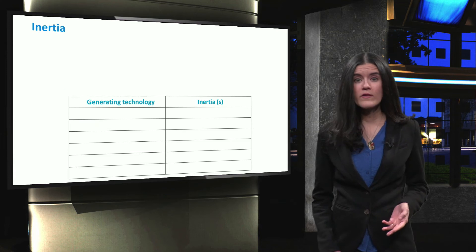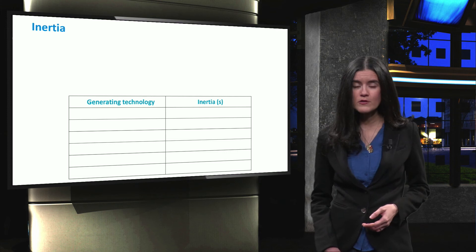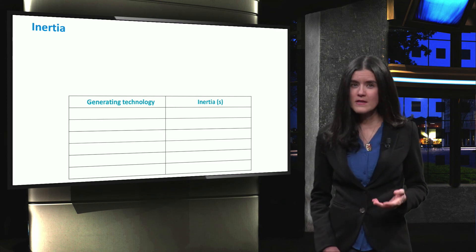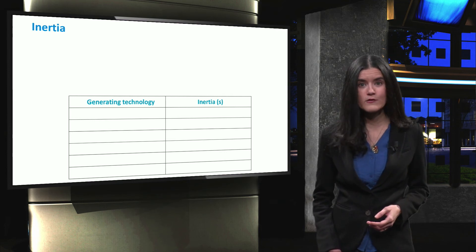Any generator with a rotating mass that is directly connected to the grid provides the inertial response inherently. This effect cannot be obtained if the generator is connected via a power-electronics interface.